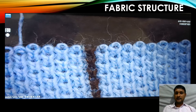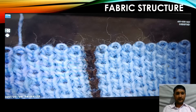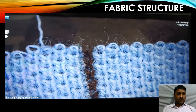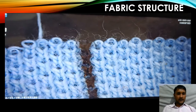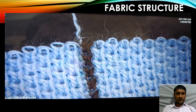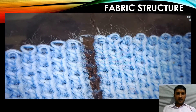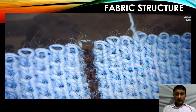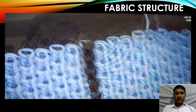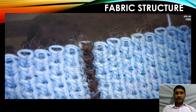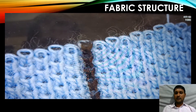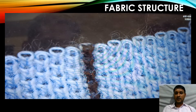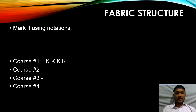Let's start unravelling course number 1. While unravelling course number 1, we are finding the complete loop is getting unravelled from the previously knitted loop. So we can mark course number 1 as knit, knit, knit, knit.